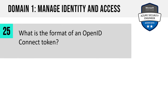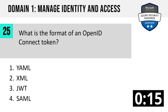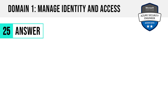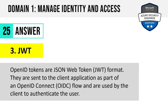Question 25. What is the format of an OpenID Connect token? YAML, XML, JWT (JSON Web Token), or SAML? From Domain 1 of the AZ-500 exam, you might see questions around OpenID or OAuth 2. The answer is three: JWT. OpenID tokens are JSON Web Token format. They're sent to the client application as part of an OpenID Connect flow and are used by the client to authenticate the user.